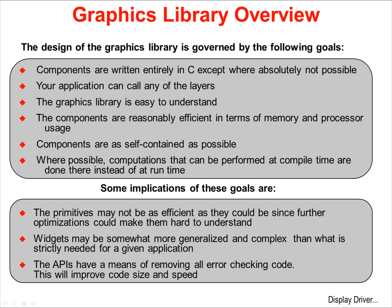The design of the graphics library has been governed by the following goals: that the components have been written entirely in C except where absolutely not possible; that your application can call any of the layers; that the graphics library is easy to understand and the components are reasonably efficient in terms of memory and processor usage. Those two goals can be somewhat at odds with each other — code can be so efficient that you can't understand it, and if you can't understand it you're not going to be able to use it. Any computations that need to be performed will be performed at compile time instead of using up cycles on your CPU at run time.